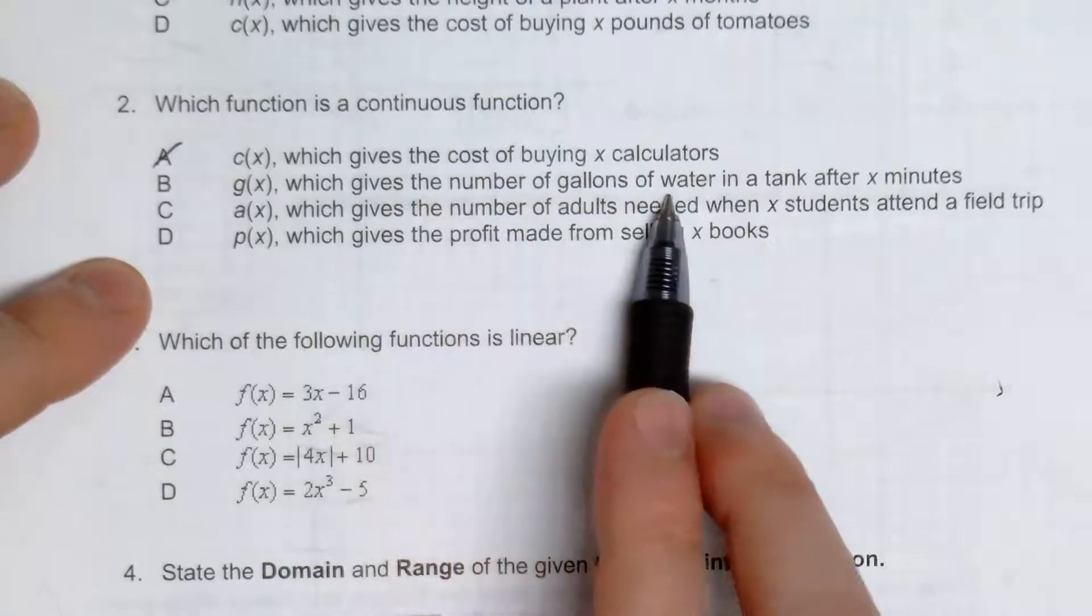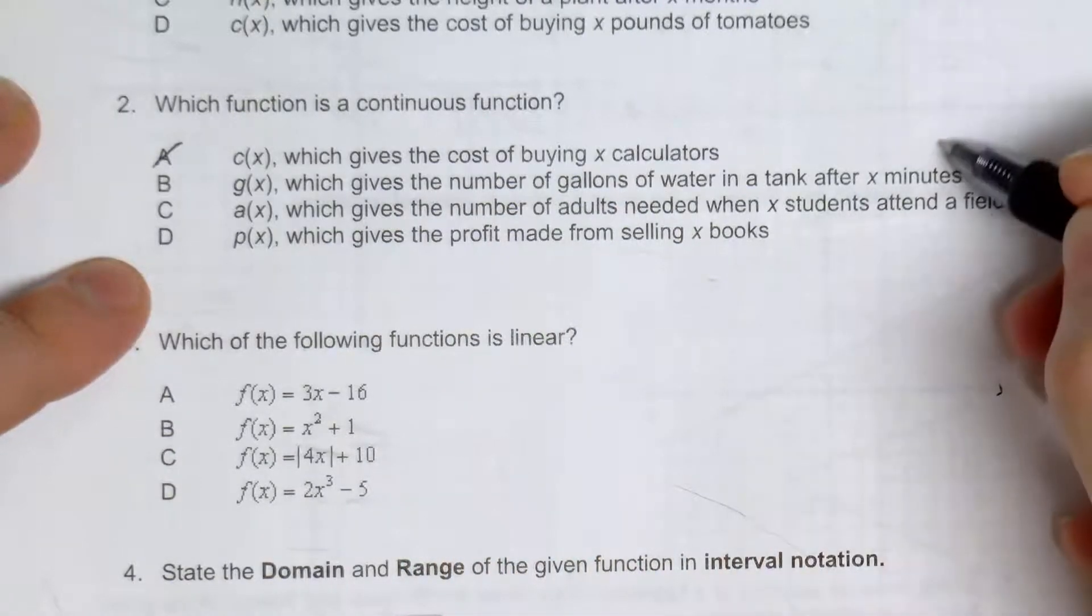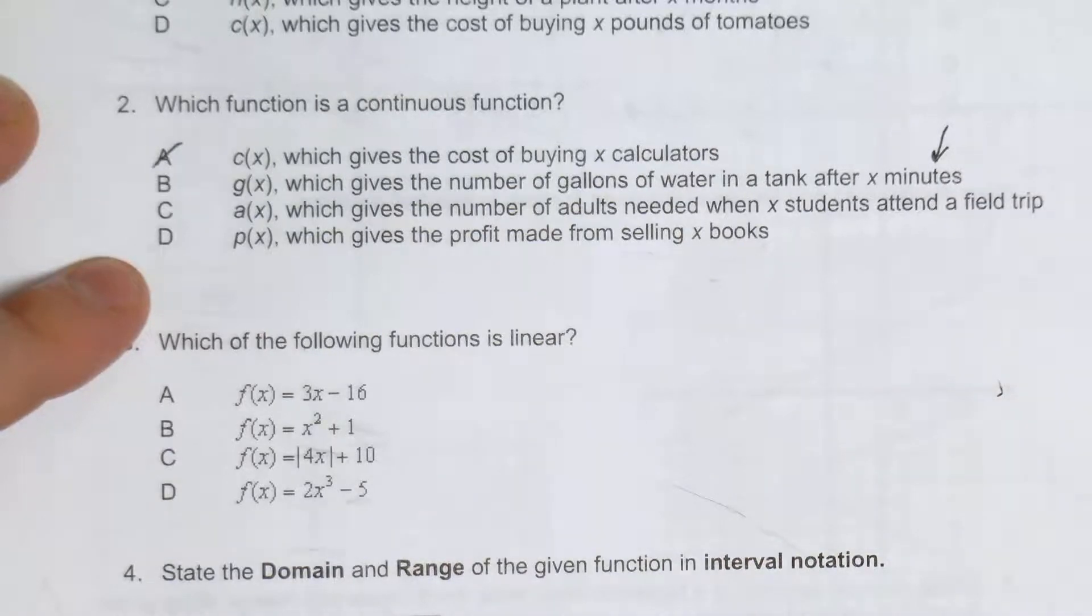G of X, which gives the number of gallons of water in a tank after X minutes. Looks like we could have this because that's an interval within the minutes. Let's just try the next.